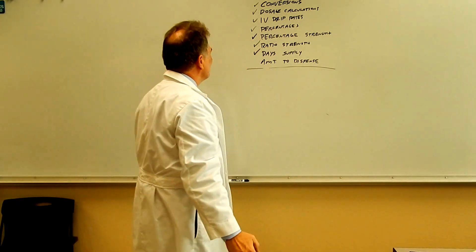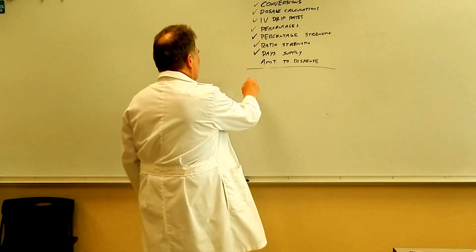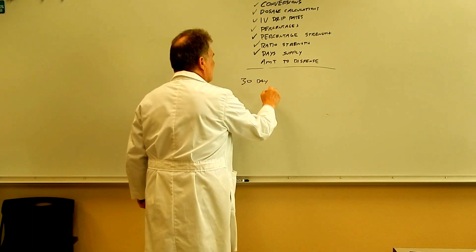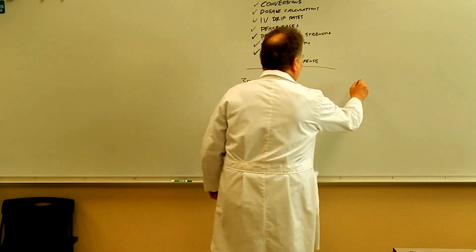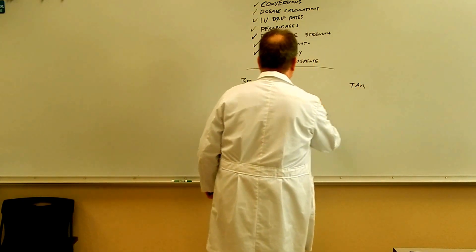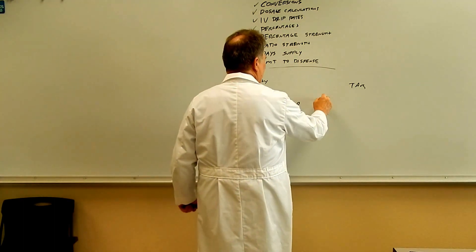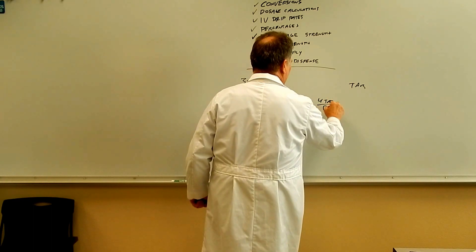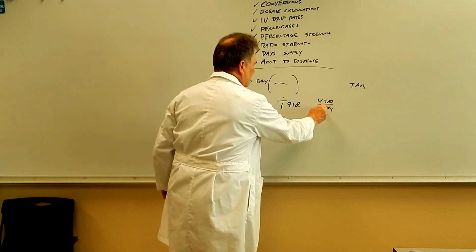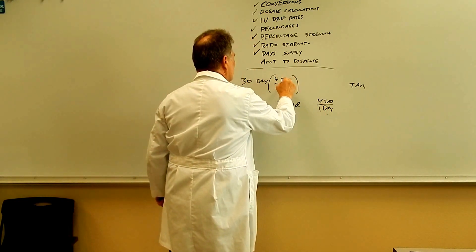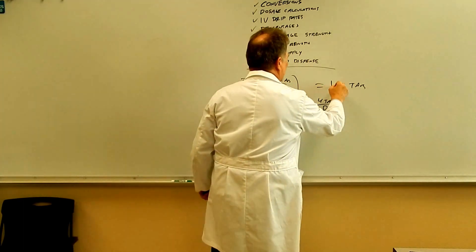The amount to dispense is pretty much just the opposite of the day supply problem. Let's say you need a 30-day supply and want to figure out how many tablets to give, and this time the SIG is one QID — one tablet four times a day, so four tablets per day. Put tablets on top and days on the bottom. 30 times four equals 120 tablets.